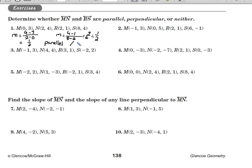If you want, you can use the parallel symbol instead of writing the word. Let's do number 2. Again, for MN, we've got to find that slope: 5 minus 3 over 0 minus negative 1. 5 minus 3 is 2, and 0 minus negative 1 is positive 1. So we have 2 over 1 as that slope.